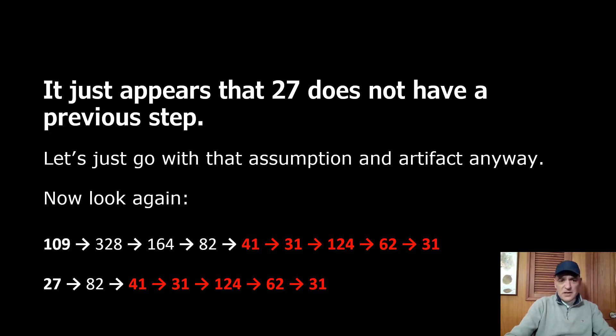So if we go with that assumption, which is based on an artifact of the 3x+1 function, we can understand what's happening. Let's look again at 109 and we see that it multiplied by three and add one is 328 and then we have it twice and then we come to 41.